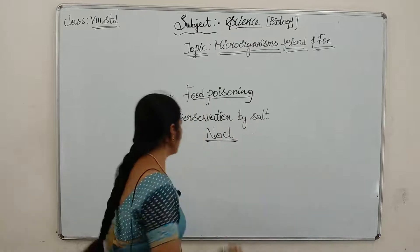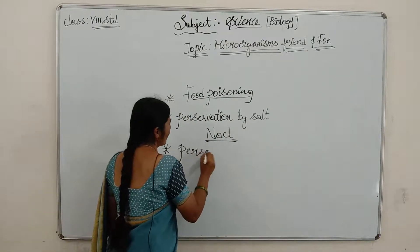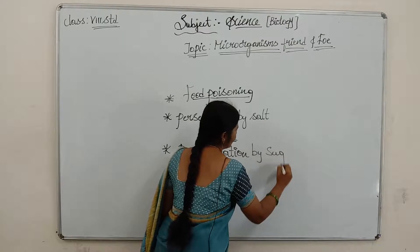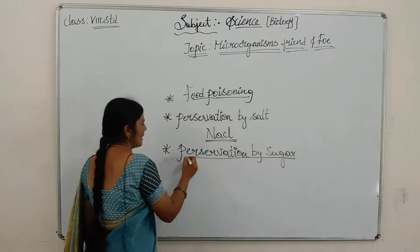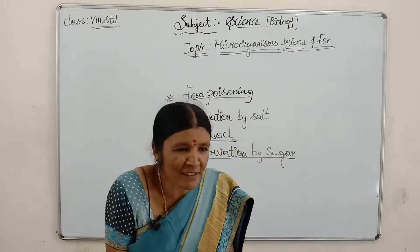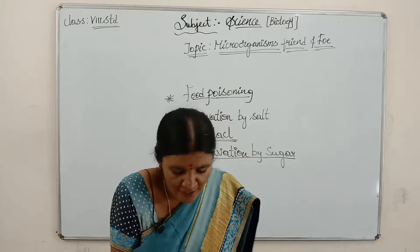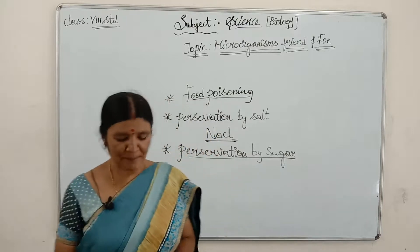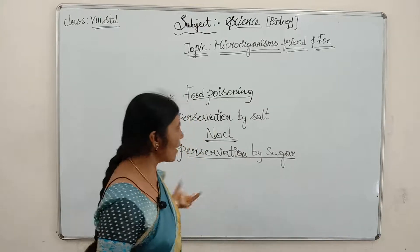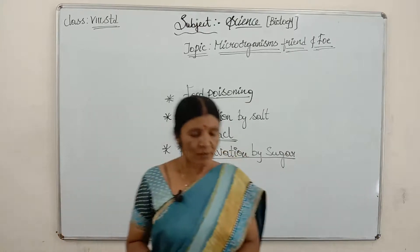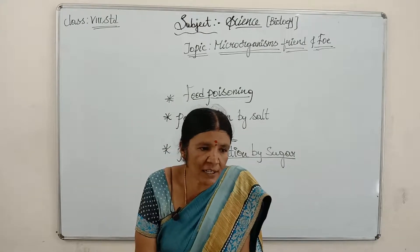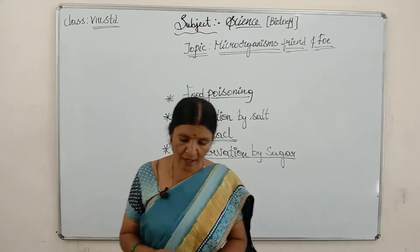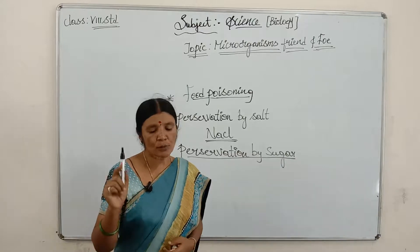A second method of preservation is by sugar. We can preserve food by adding sugar — jamun, jellies, jams, and squashes are preserved by adding sugar. Sugar draws out the moisture from the substance and stops the growth of bacteria responsible for spoilage of food.